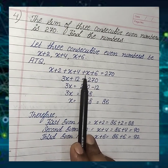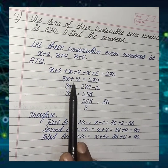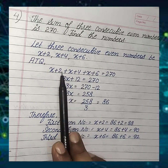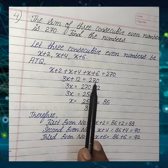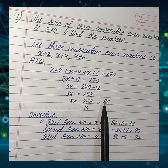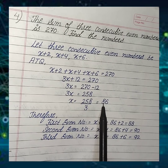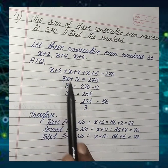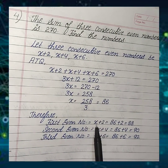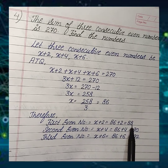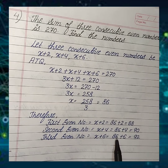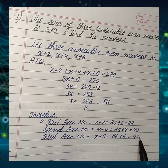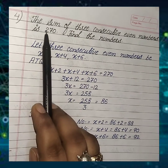Combining like terms: x, x, x gives 3x. And 2 plus 4 plus 6 gives 12. So 3x plus 12 equals 270. After solving this linear equation, we get x equals 86. Putting the value of x: the first even number is x plus 2, that is 86 plus 2, which is 88. The second will be 86 plus 4, that is 90. And the next will be 86 plus 6, that is 92. So these are the 3 consecutive even numbers whose sum is 270.